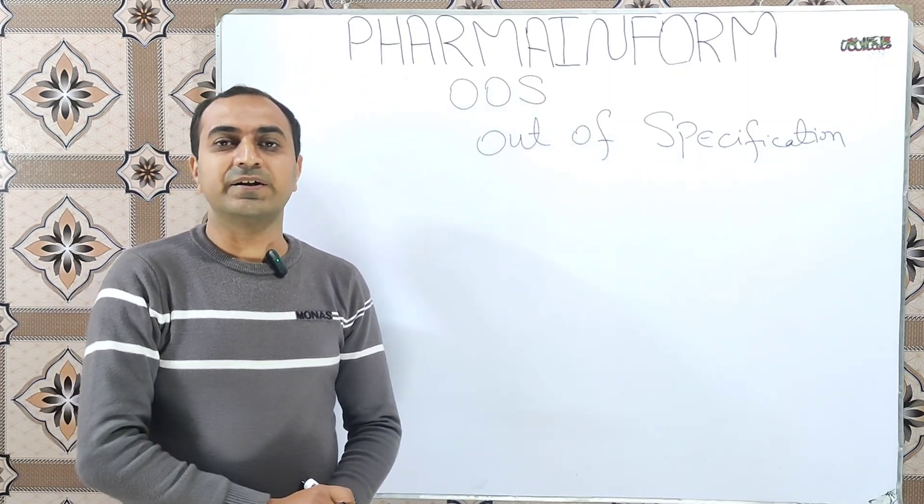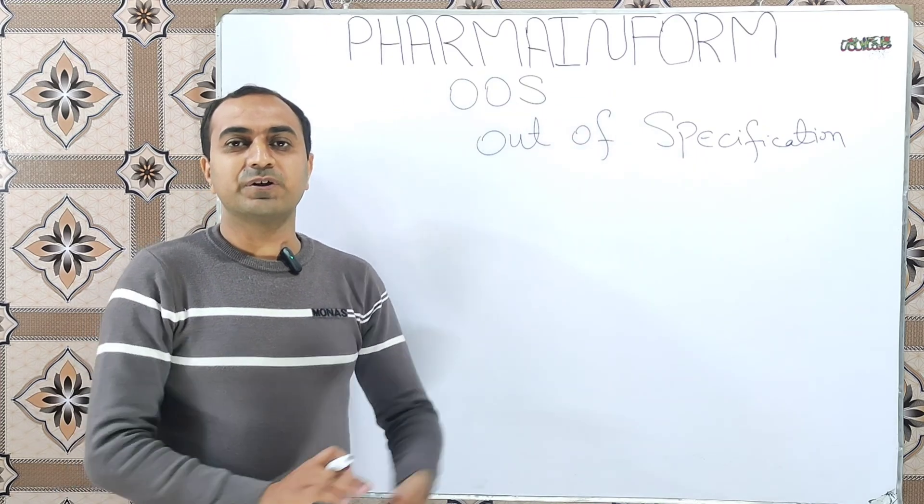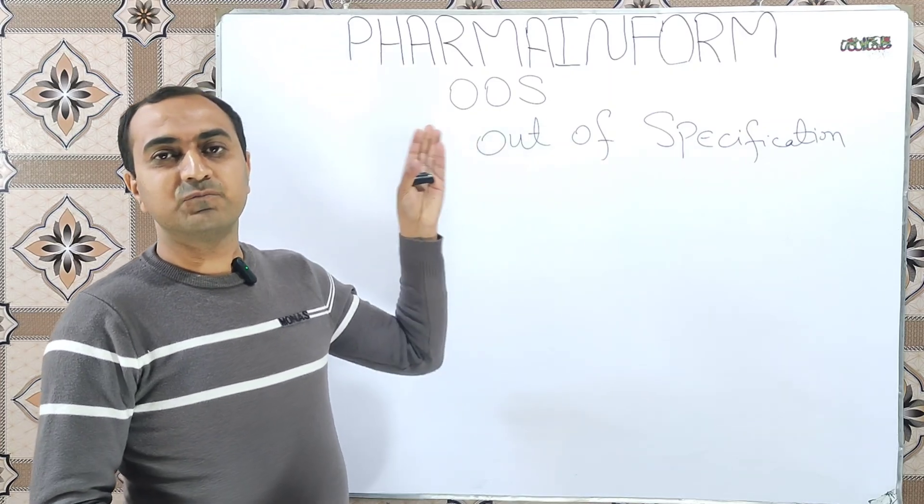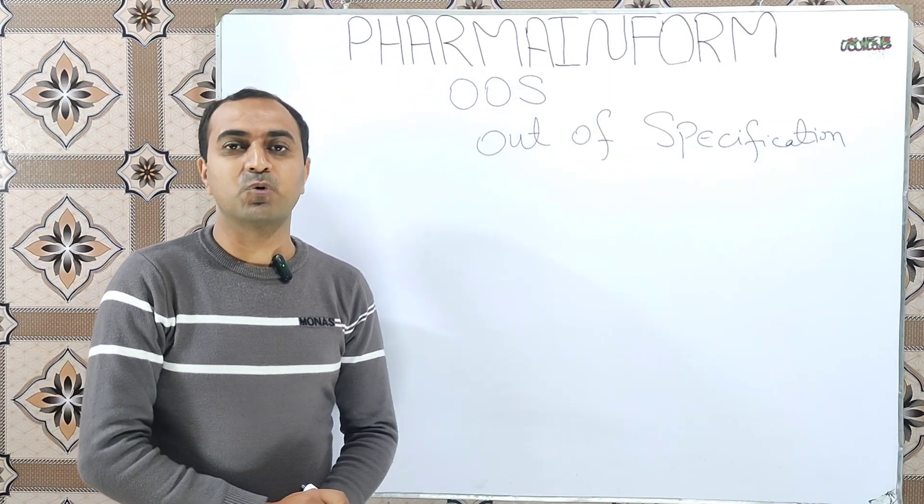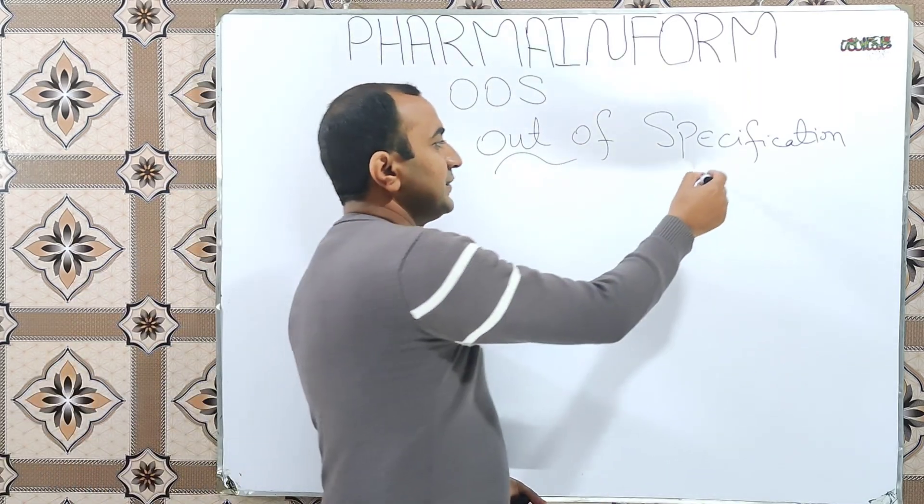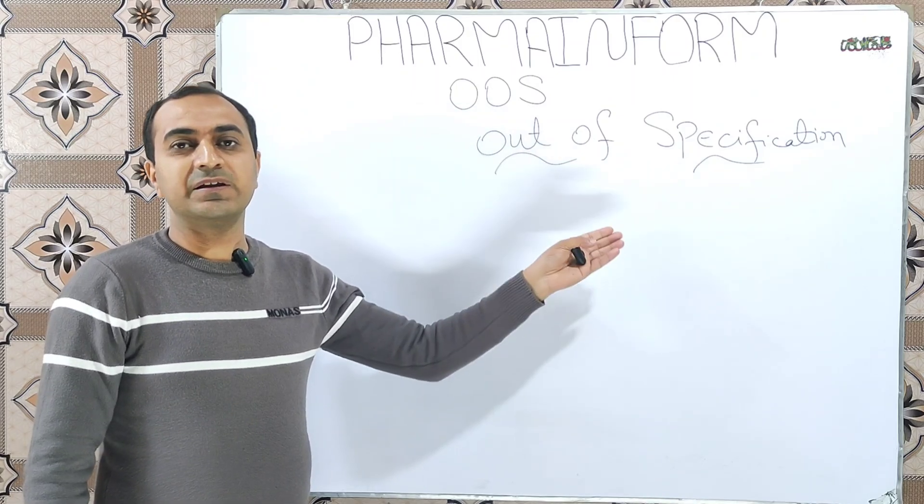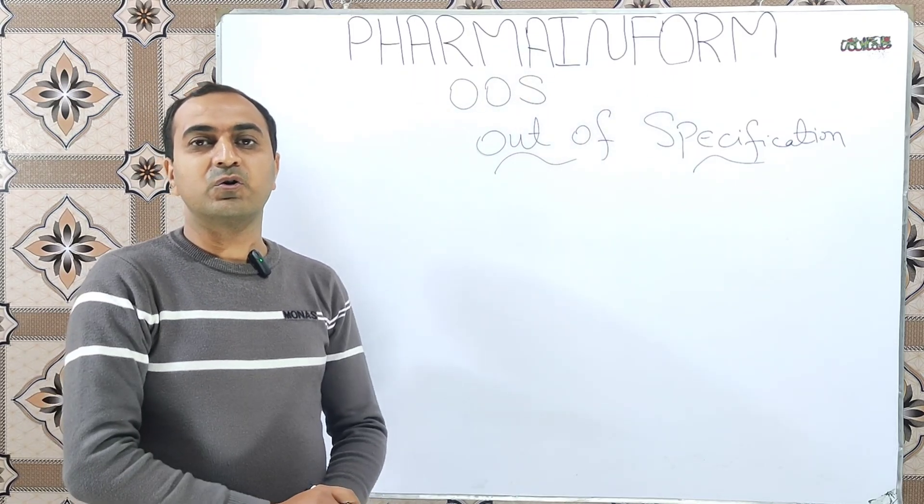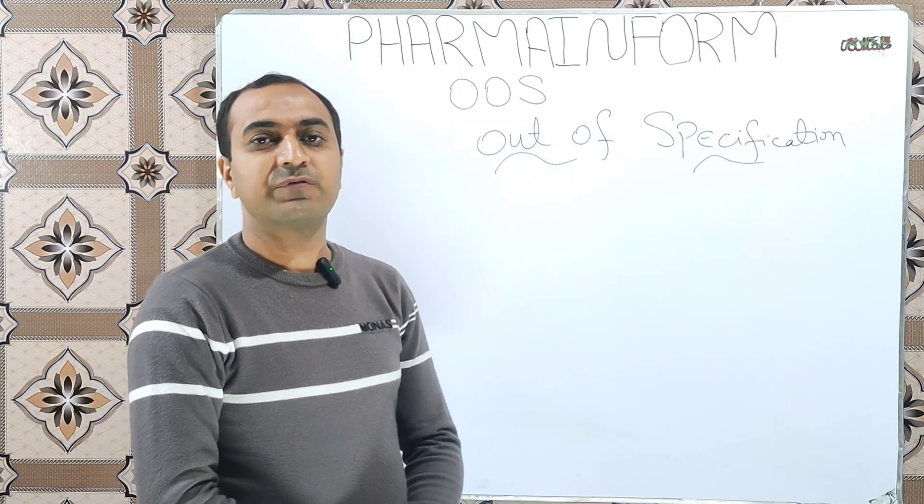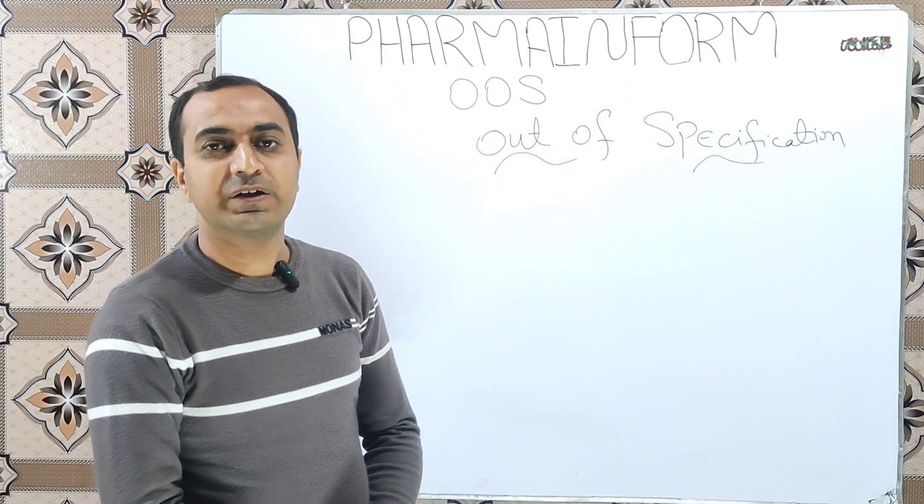As we discussed previously, OOS is out of specification and this word structure is composed of two main words: one is 'out of' and second one is 'specifications.' Out of means away or not within limits, and specifications you are familiar with - any predefined limits provided by the manufacturer, SOPs, or pharmacopias like BP or USP.